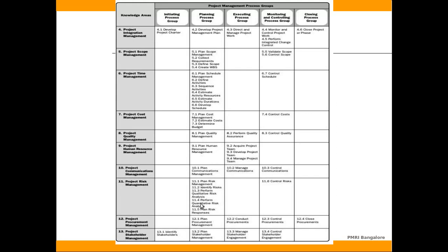To summarize: we are dealing with PMBOK version 5, which comprises of 47 processes grouped into 10 knowledge areas, and these are again grouped into 5 process groups of Initiation, Planning, Execution, Monitoring and Controlling, and Closing.